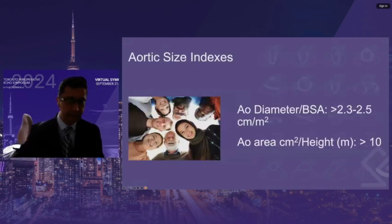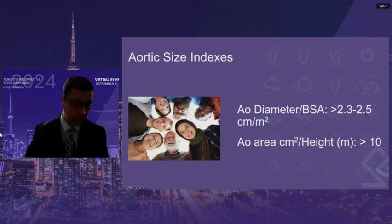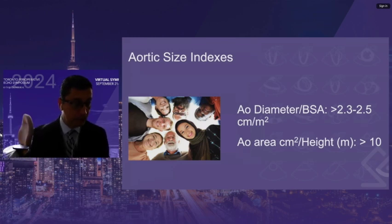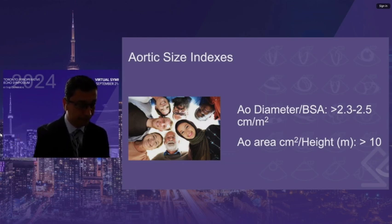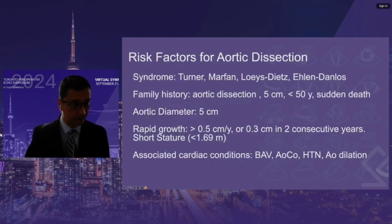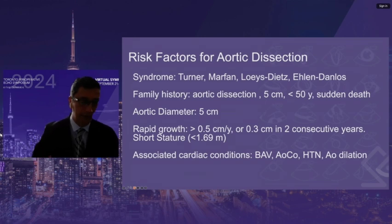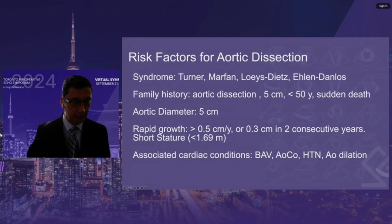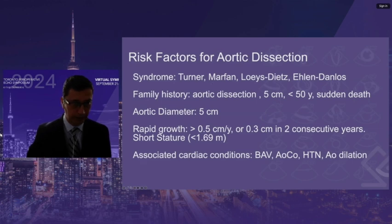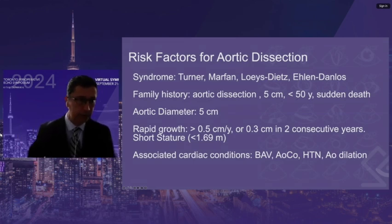The aortic size index has been described using different equations; however, the guidelines do not recommend any specific type of index and instead still use absolute cut-point values. Risk factors for aortic dissection include syndromes or associated cardiac conditions such as bicuspid aortic valve, aortic coarctation, or aortic dilation; syndromes associated with dissections or aneurysms; family history of relatives with aortic dissection or sudden death younger than 50 years; or if the patient has already been diagnosed with an aortic aneurysm — all indicating high risk of dissection.